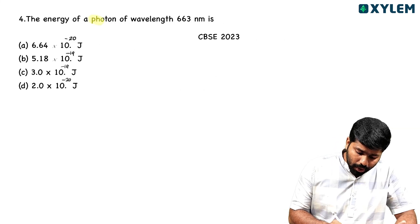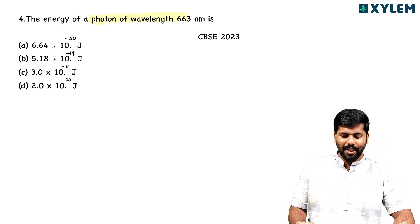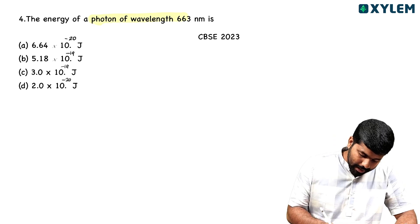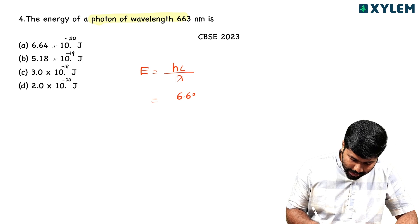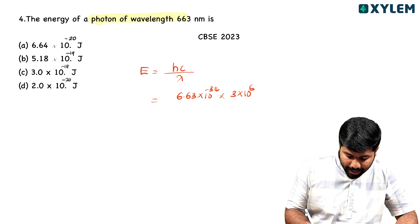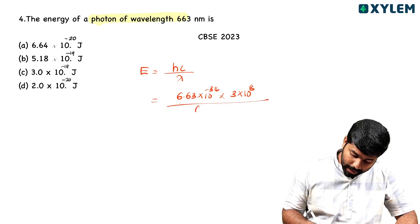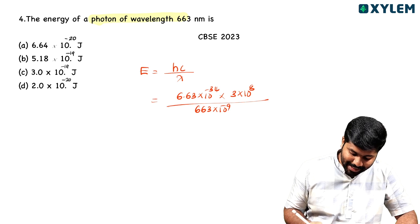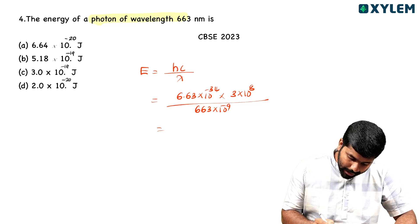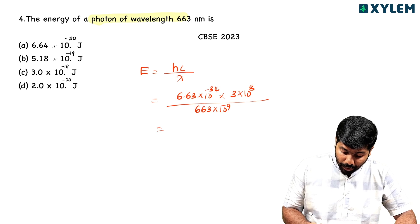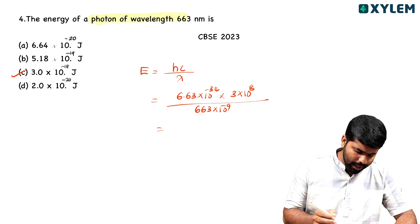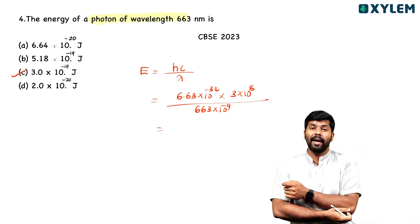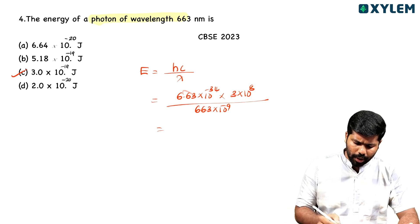The energy of a photon of wavelength 663 nanometer. E equals hc by lambda: 6.63×10⁻³⁴ × 3×10⁸ divided by 663×10⁻⁹. We have already done this type before, and the calculation gives us the energy value.